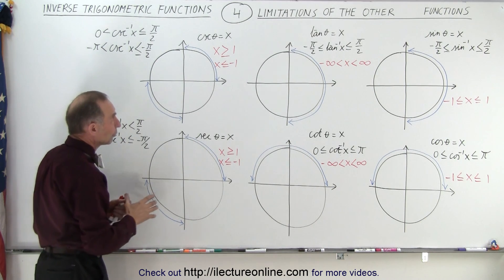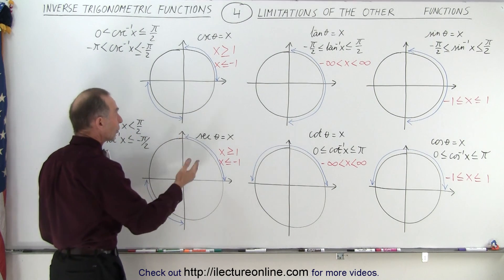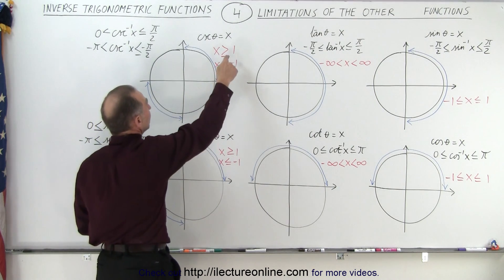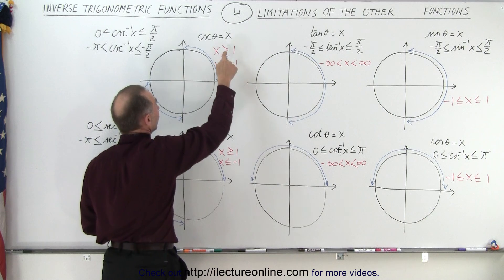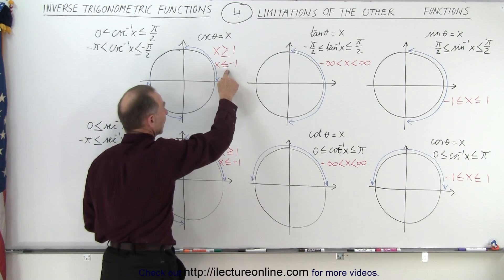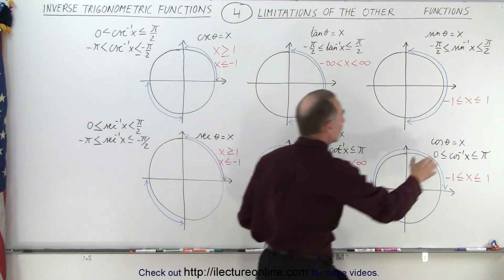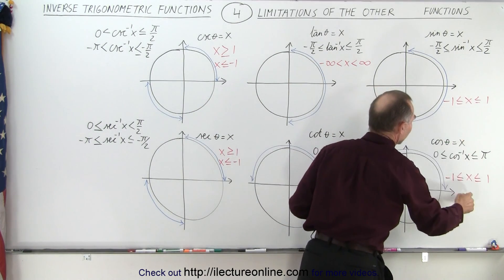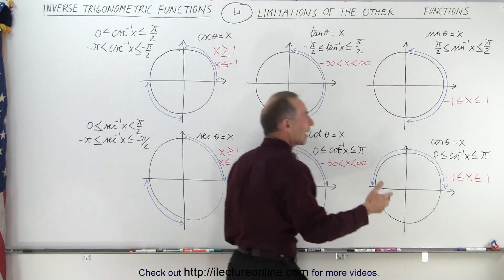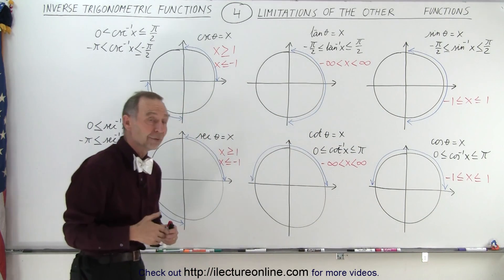The limits for the values for x with the secant and the cosecant, notice that it needs to be greater than or equal to 1 or less than or equal to negative 1. Same for the secant. And notice that it's almost in reverse to what we are allowed to use for sine and cosine, except the overlap is the value of 1 and the value of negative 1.